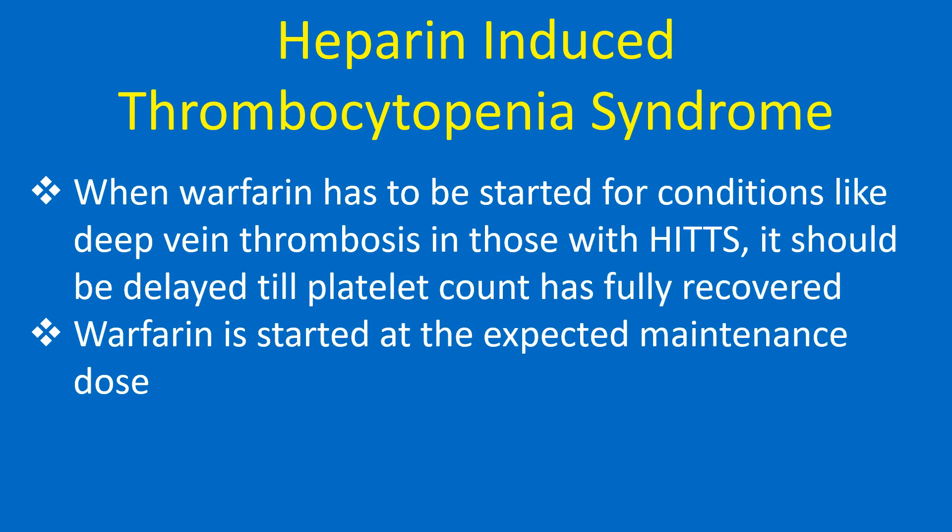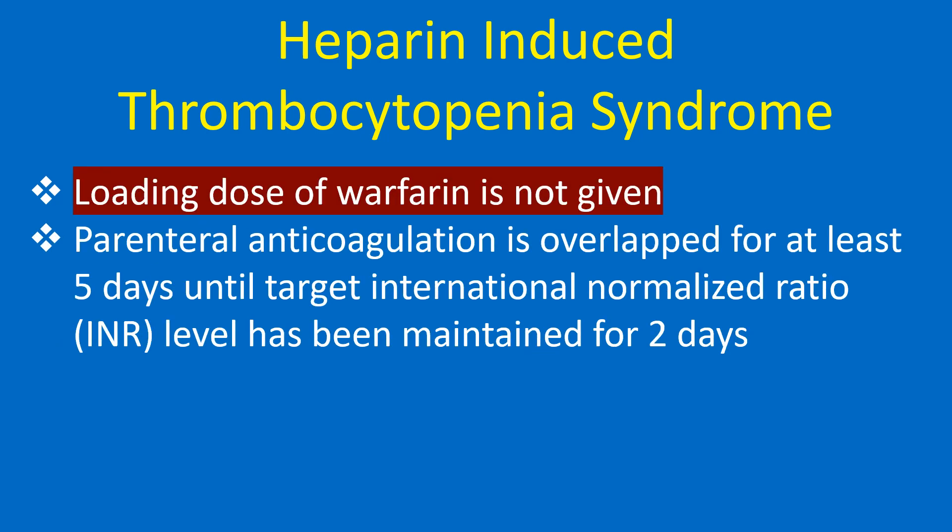When warfarin has to be started for conditions like deep vein thrombosis in those with HIT, it should be delayed until the platelet count has fully recovered. Warfarin is started at the expected maintenance dose — a loading dose is not given. Parenteral anticoagulation is overlapped for at least 5 days until target INR levels have been maintained for 2 days.